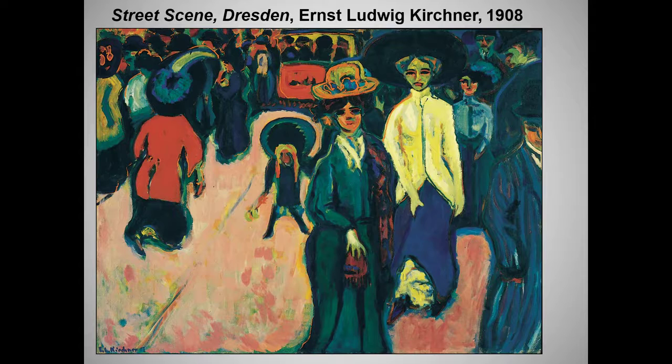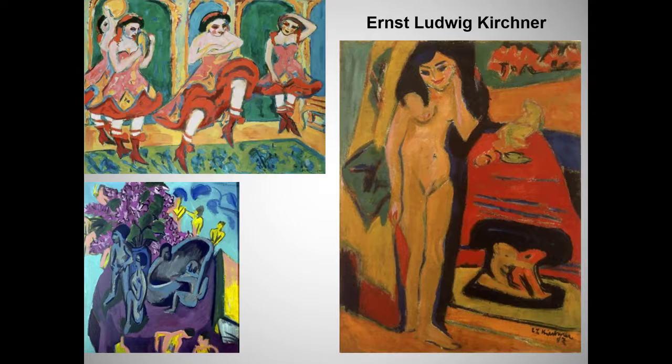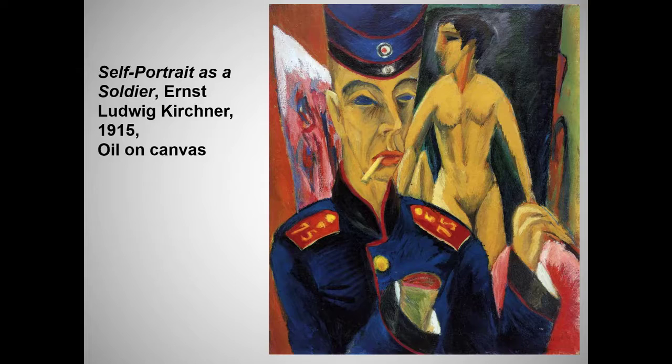The German expressionists were more likely than the Fauves to paint urban scenes, and the frenetic but isolated life of city dwellers is a constant theme in their work. They deeply admired Van Gogh and often imitated his swirling brushstrokes, and they also employed angular lines reflecting what they saw as the sharpness and danger of urban life. Other paintings by Kirchner capture these same elements: aggressive jarring color and the objectification of women.